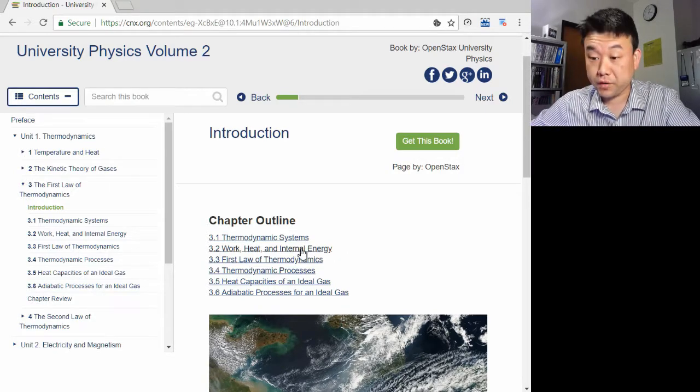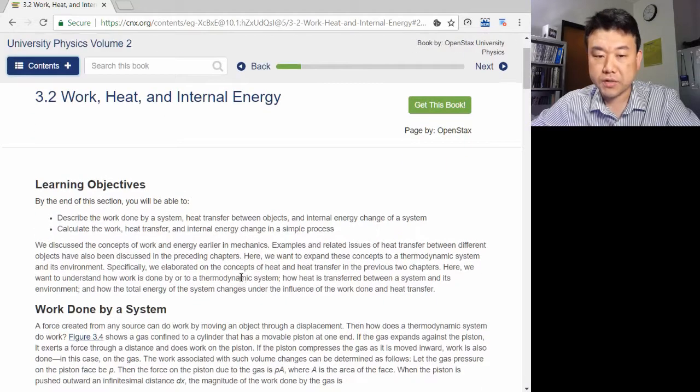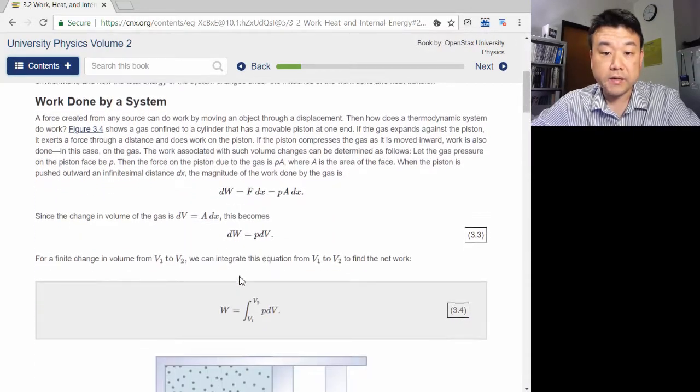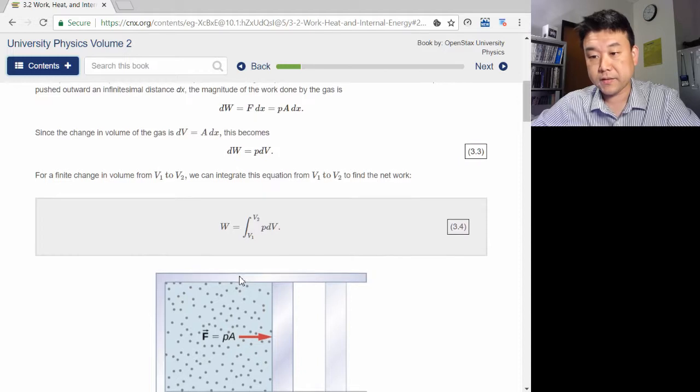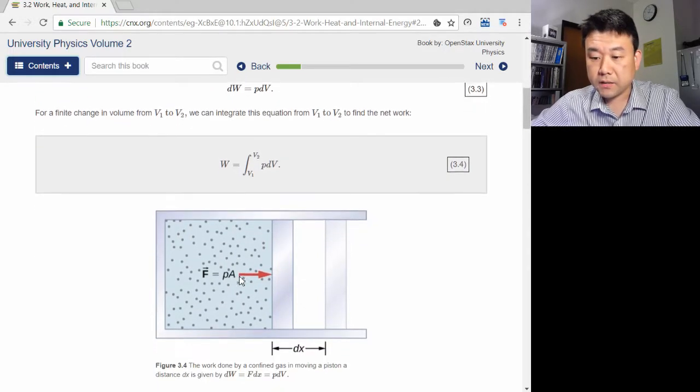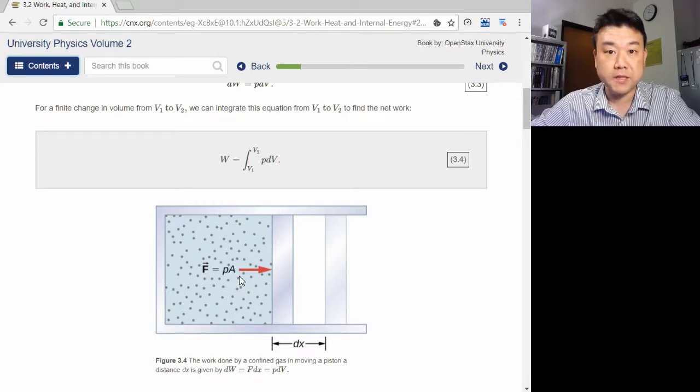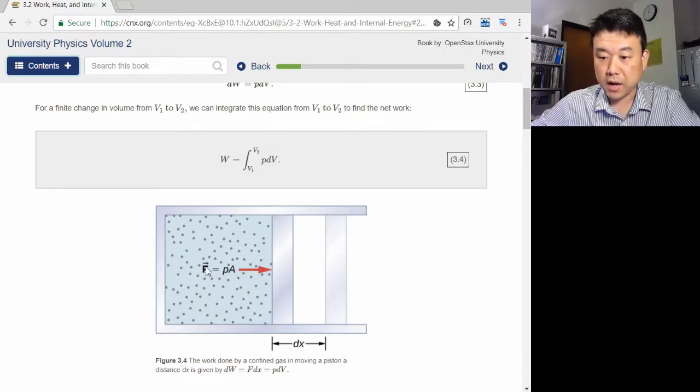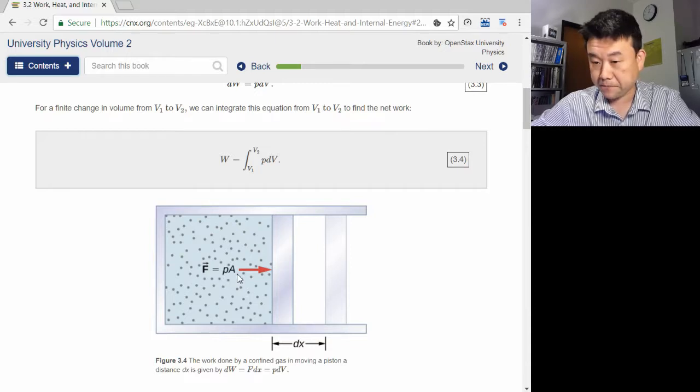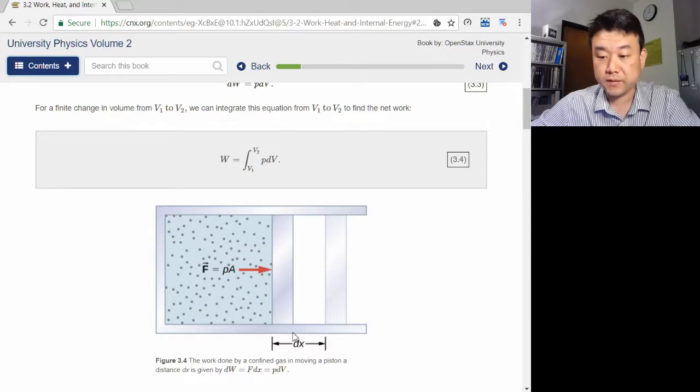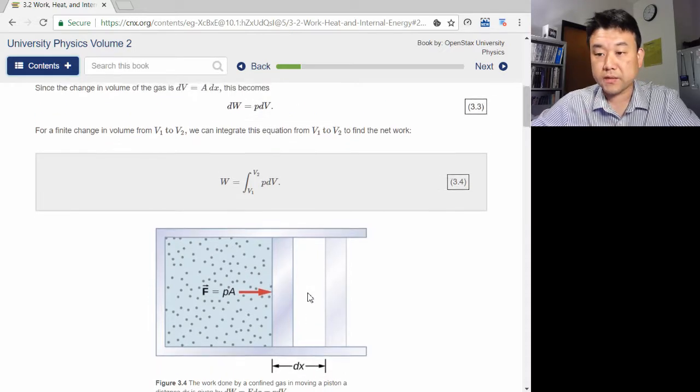In Section 3.2, a derivation is given for describing work in terms of gas quantities, pressure and volume. In Physics 4a, we defined work as force times displacement. Using the definition of pressure, you can describe force exerted by gas as pressure times area. When you combine this area, cross-sectional area, with displacement, you get change in volume, which is where we get this relationship.